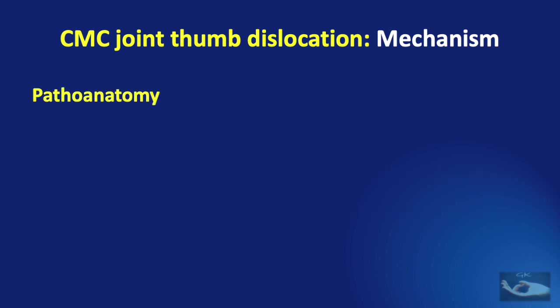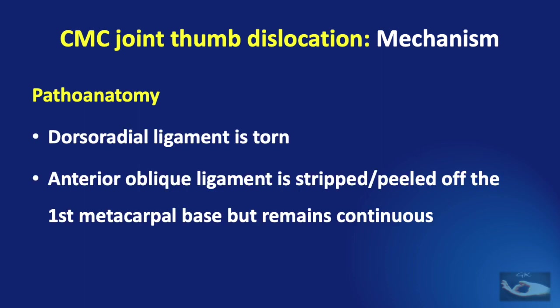When such a dislocation occurs, the dorsoradial ligament is torn. The anterior oblique ligament is partially stripped or peeled off from the first metacarpal base, but usually it remains continuous at least partly.